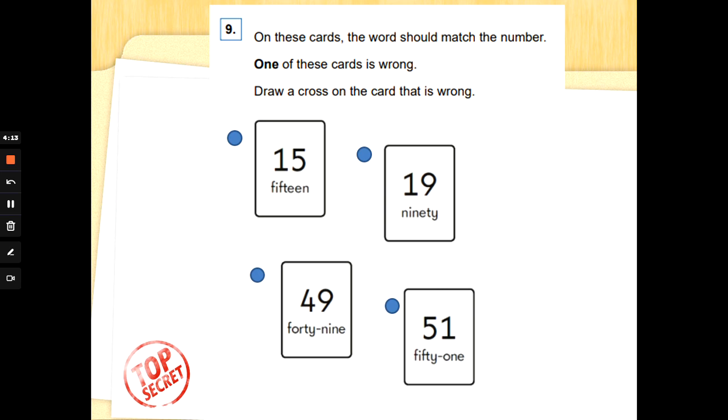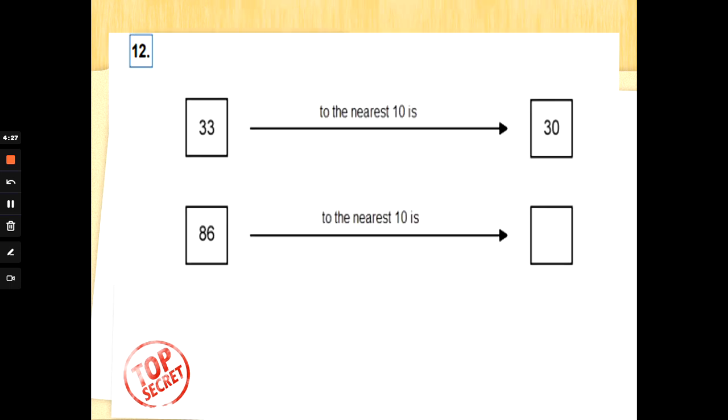Hmm, is that the number 90? Special agents, no it's not. That is the number 19. When there's just one 10, we say teen. Okay, did you spot that one before me? Well done if you did.